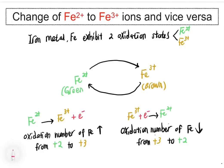Today we will discuss examples of redox reactions, specifically the change of Fe2+ ion to Fe3+ ion and vice versa. Iron is a transition metal, so it exhibits two oxidation numbers: plus two and plus three. Fe2+ ion is green in color while Fe3+ ion is brown in color. The oxidation number of Fe2+ is plus two and the oxidation number of Fe3+ is plus three.